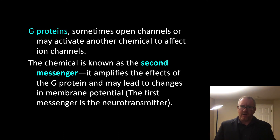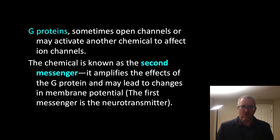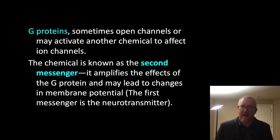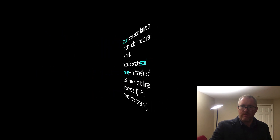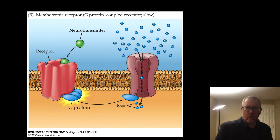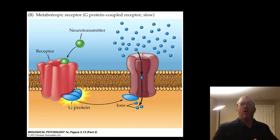DARPP-32 would be activated by a second messenger system — the chemical activated at the intracellular side of the metabotropic receptor. This second messenger amplifies the effects of the G-protein and may lead to changes in membrane potential, either hyperpolarization or depolarization, though there are a wide array of other possible effects. Here is a representative image of a metabotropic receptor showing the seven transmembrane units being activated by a neurotransmitter, the three-part G-protein becoming activated, and producing effects including direct activation of surrounding ion channels.